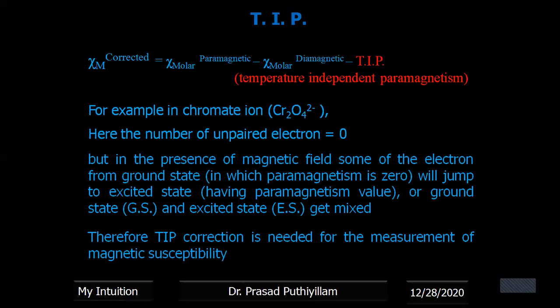Therefore, in case of chromate ion, even though there are no unpaired electrons, zero, but in presence of magnetic field, some of the electrons in the ground state - which are in paramagnetism it is not there because ground state there are no unpaired electrons - will jump, the electrons will jump to higher energy levels in presence of magnetic field. So when it jumps to higher energy level, then we will be having unpaired electrons.